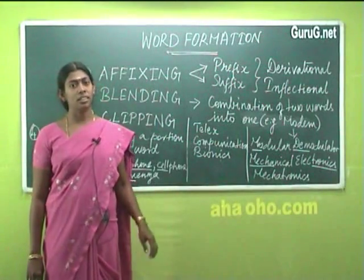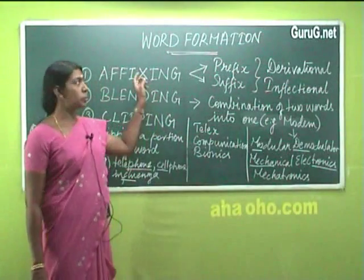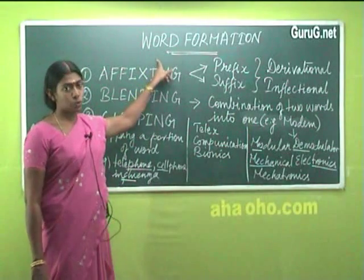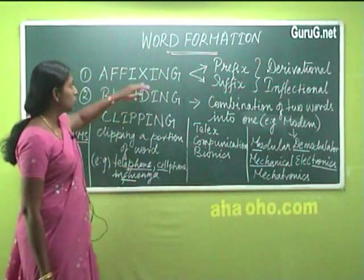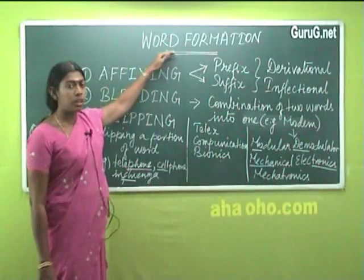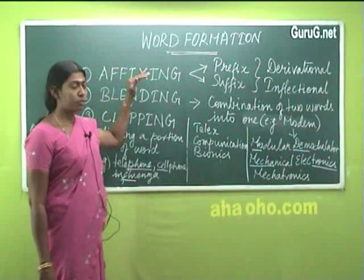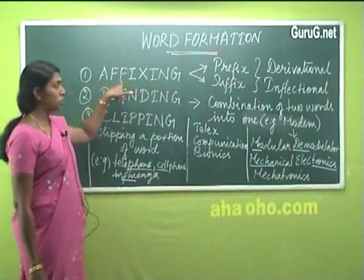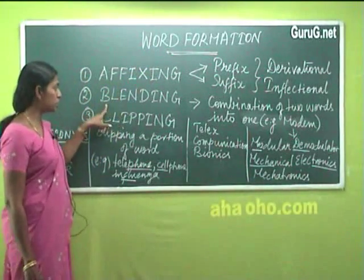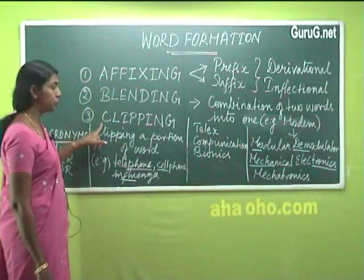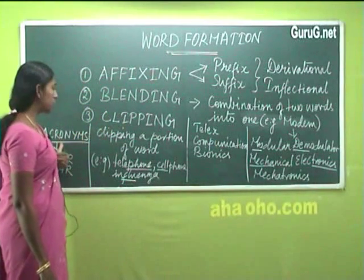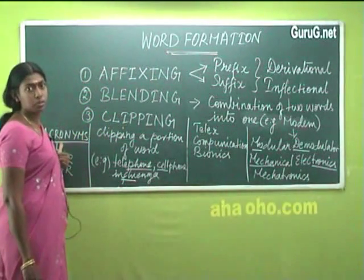Happy to meet you all. The topic we are going to discuss today is word formation. You can form words mainly by four kinds: number one, affixing; two, blending; three, clipping; and four, acronyms.